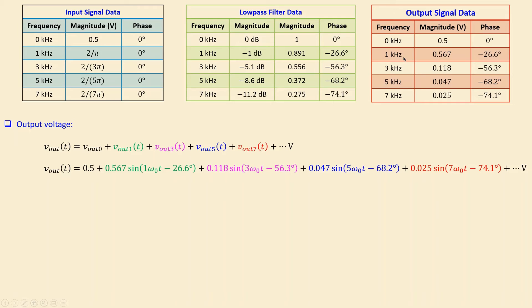The output voltage expression in time domain uses the amplitude and phase values from the table. At one kilohertz (fundamental), the amplitude is 0.567 and the phase is minus 26.6 degrees. The DC term is simply 0.5. At three kilohertz, the amplitude is 0.118 and the phase is minus 56.3 degrees. We continue with five times and seven times the fundamental, each with its corresponding amplitude and phase, using a template of sine times frequency plus phase orientation from the table.